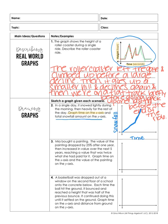I'm going to have you try number three on your own. It says: Mia bought a painting. The value of the painting dropped by 25% after one year, then increased in value over the next five years. Remember, those numbers don't necessarily tell you exactly what to draw. All it's telling you is that it dropped by 25%. So if it dropped, that means it went down.